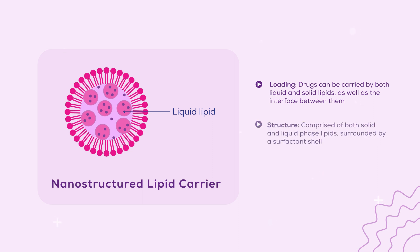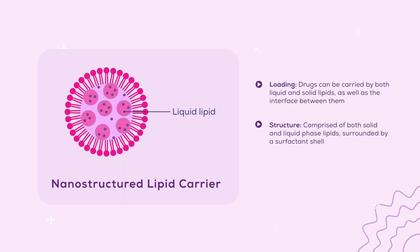Nanostructured lipid carriers are comprised of both solid and liquid phase lipids. Here, bioactive compounds can be within a solid or liquid phase, the interface between solid and liquid, or even all three. The size range of nanostructured lipid carriers is around 40 to 1,000 nm, but again, the smaller size range is preferred for therapeutics.